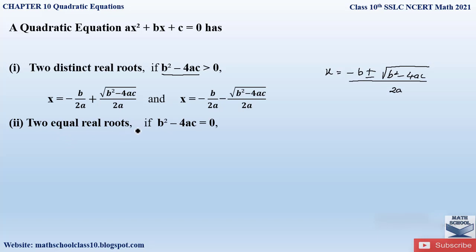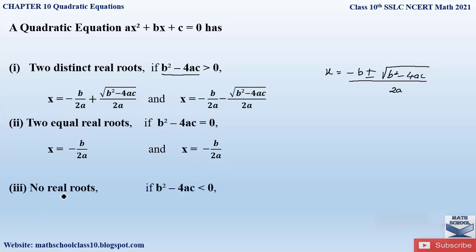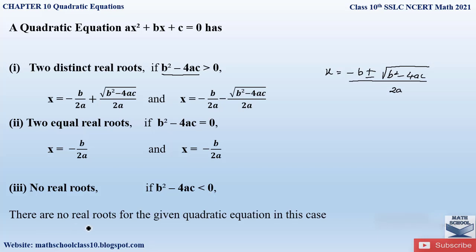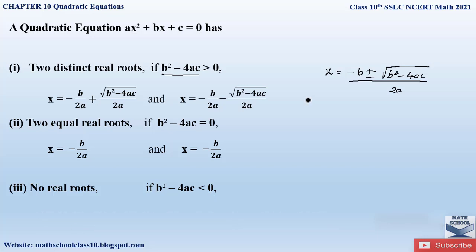The second condition is two equal roots: when b² − 4ac = 0, you obtain two equal or same roots, both equal to −b/2a. The third condition is no real roots: when b² − 4ac < 0, there will be no real roots for the given quadratic equation.